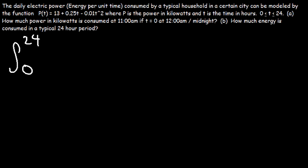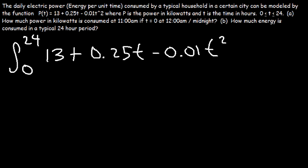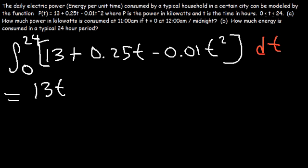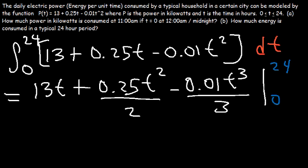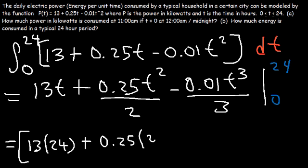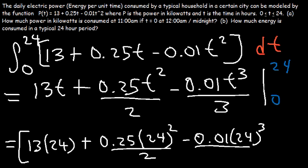So let's go ahead and use that. So a is 0 and b is 24, and we're going to integrate this particular function. The antiderivative of 13 is 13t, and the antiderivative of 0.25t is 0.25t squared divided by 2. And for the last one, it's going to be 0.01t to the third divided by 3, evaluated from 0 to 24. So let's begin by plugging in 24. Now if we plug in 0, the whole thing is going to be 0 on the right side.